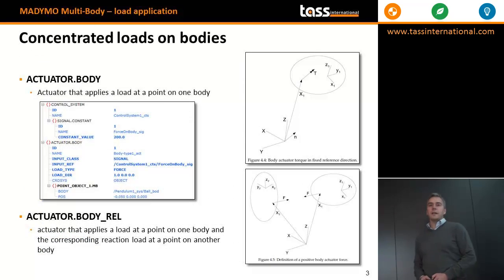First, I will explain how to apply concentrated loads on a multibody system. With the element ACTUATOR_BODY, you can apply a concentrated load to a single body by defining the point of application and direction with respect to a global or local coordinate system, and you can apply the magnitude of the force in a control system using a signal element.